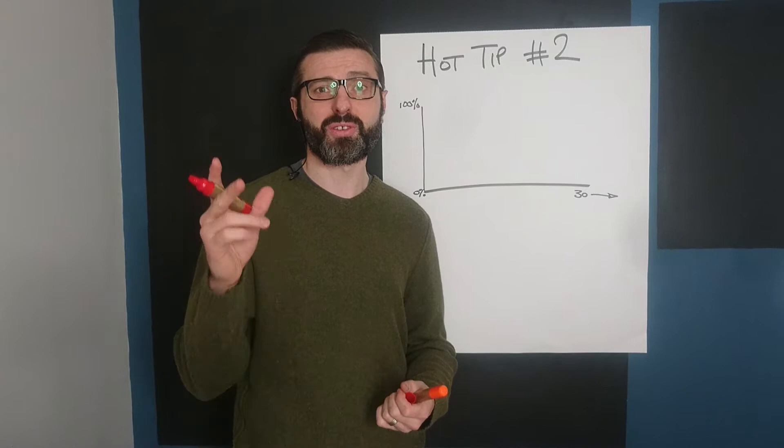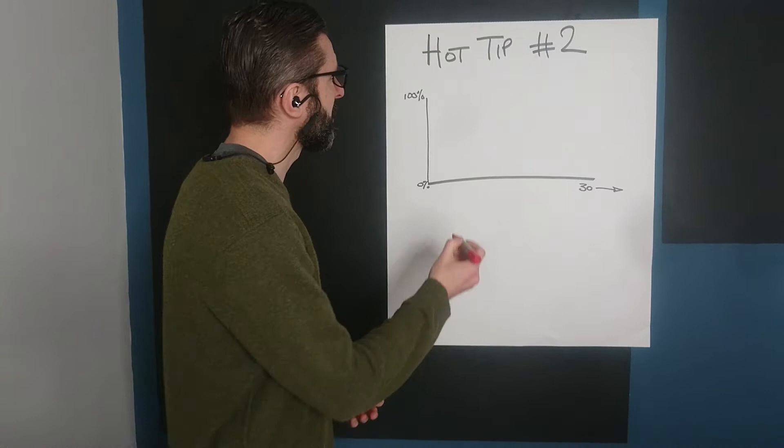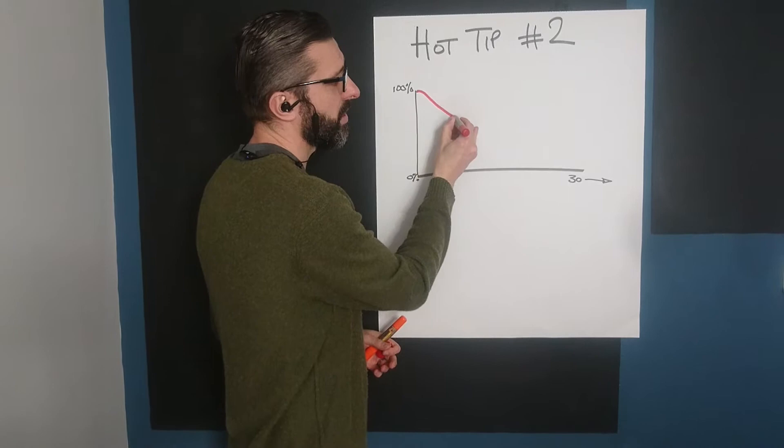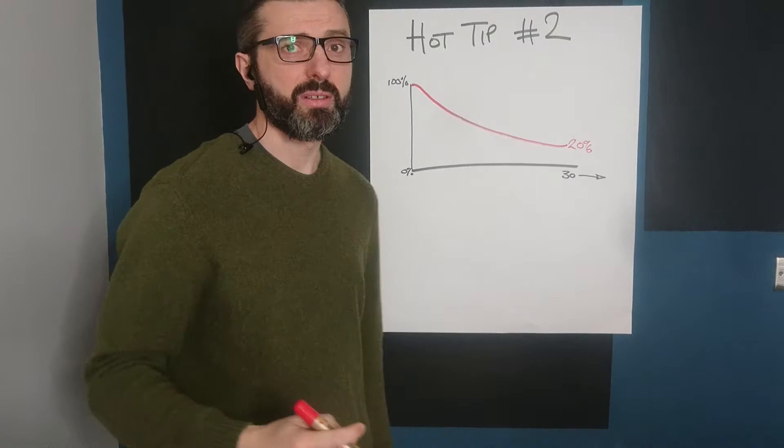So let's have a look at Ebbinghaus's forgetting curve again. The forgetting curve says that on day one of the learning we start at 100%, but over the course of 30 days we lose approximately 80% of the content.